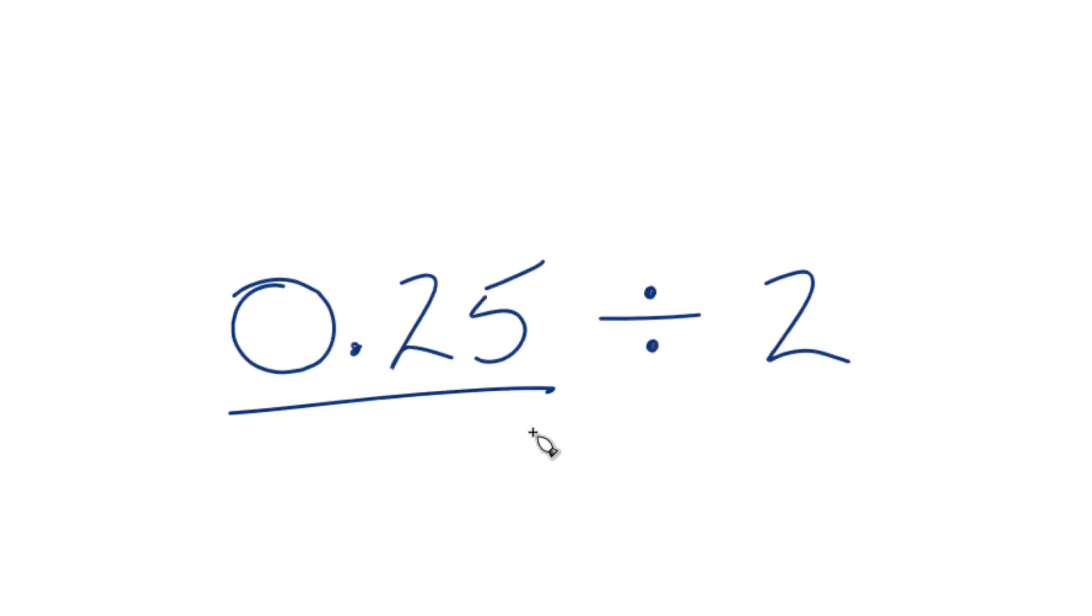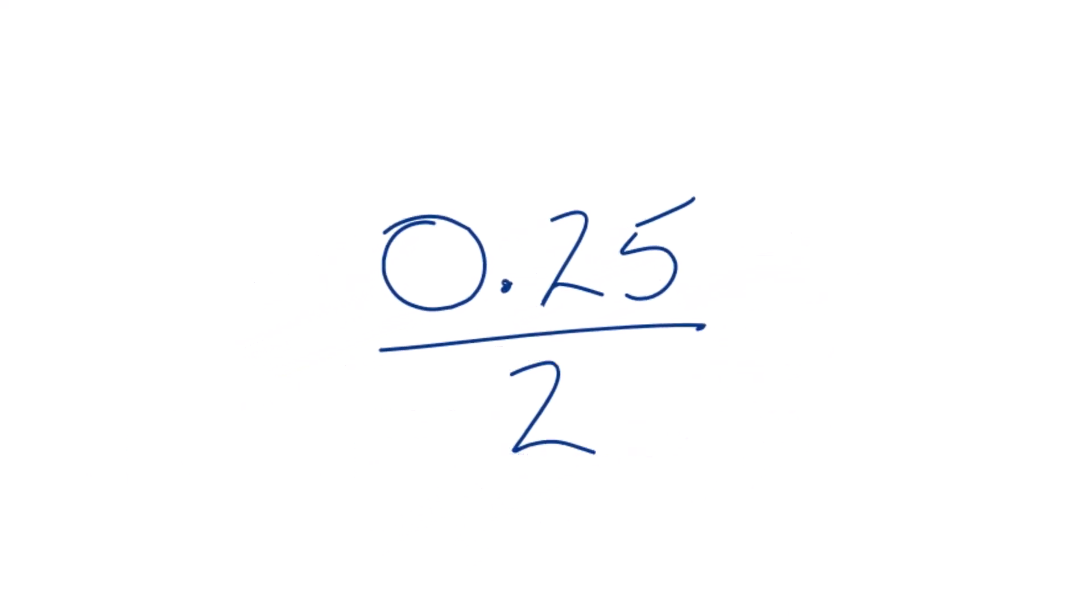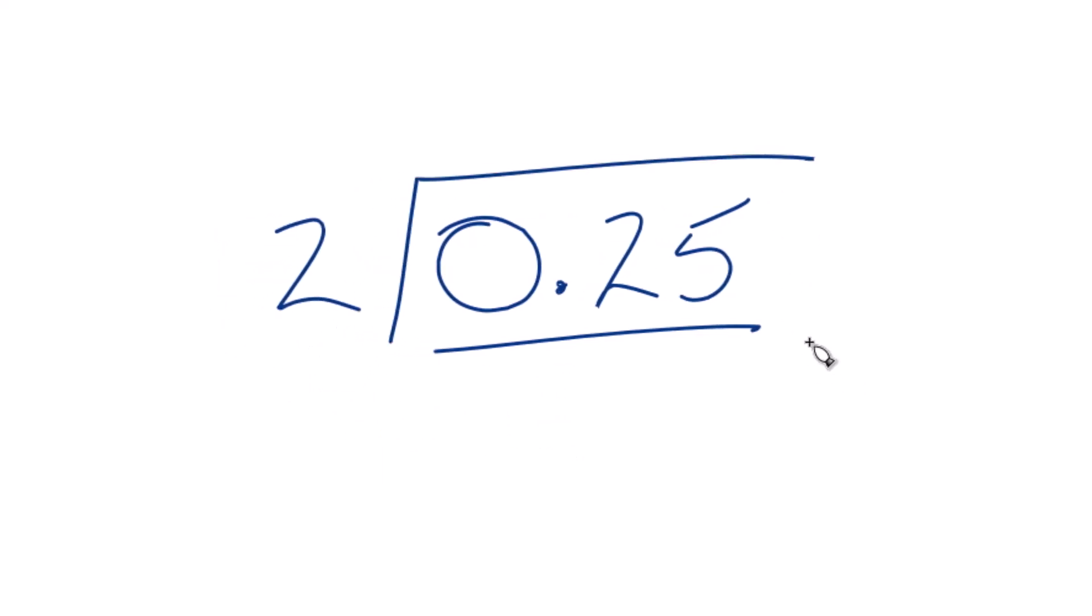Let's divide 0.25 by 2. So you could even write this 0.25 over 2 if you wanted. What we're really trying to do is take 2 and then see how many times 2 goes into 0.25.